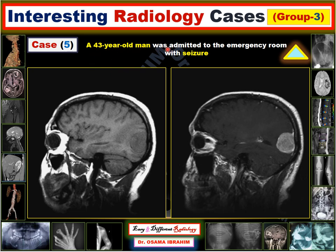Case 5: a 43-year-old man admitted to the emergency room with seizure. This is an MRI examination in sagittal view and an MRI with contrast. The T1 image shows white matter bright and gray matter dark, with bright subcutaneous fat — this is a T1 weighted image. The post-contrast T1 study shows lesions which were present on T1 without contrast and have intense enhancement on post-contrast study.